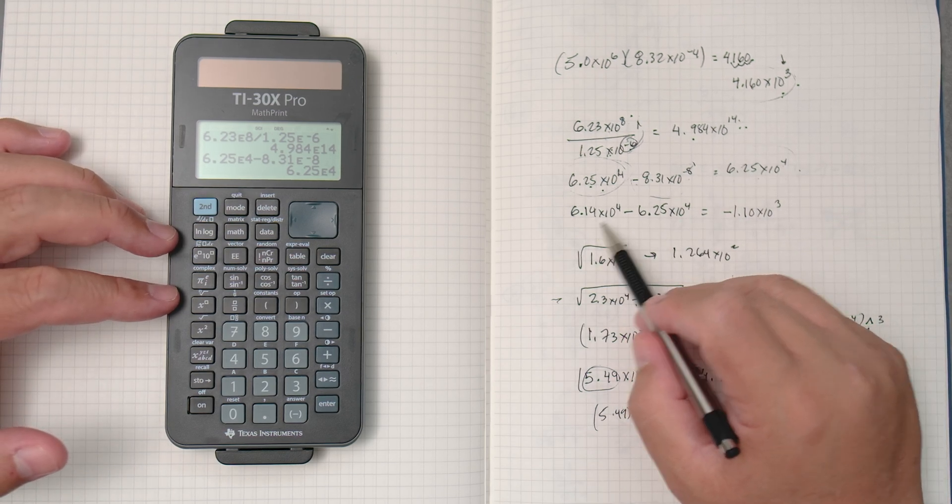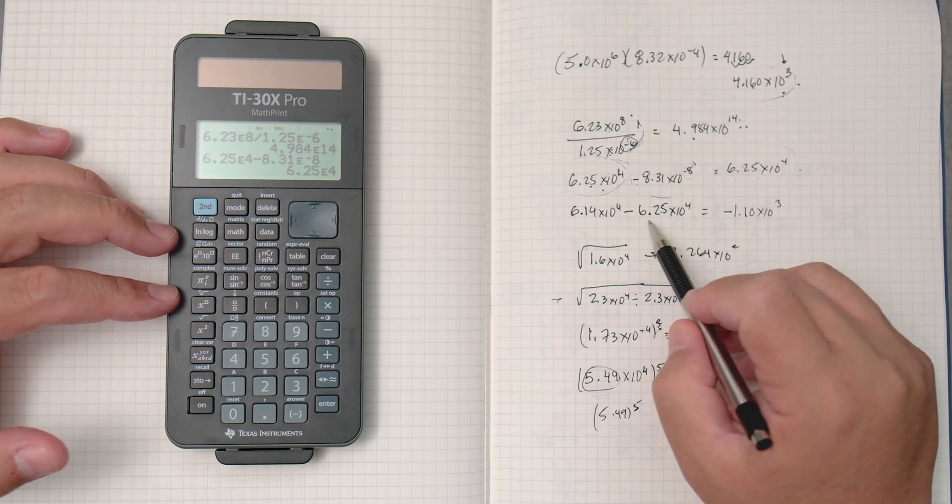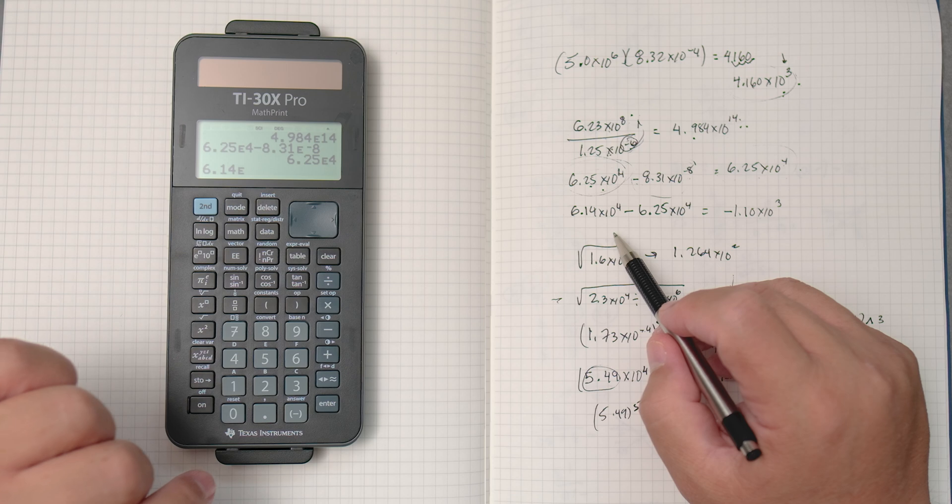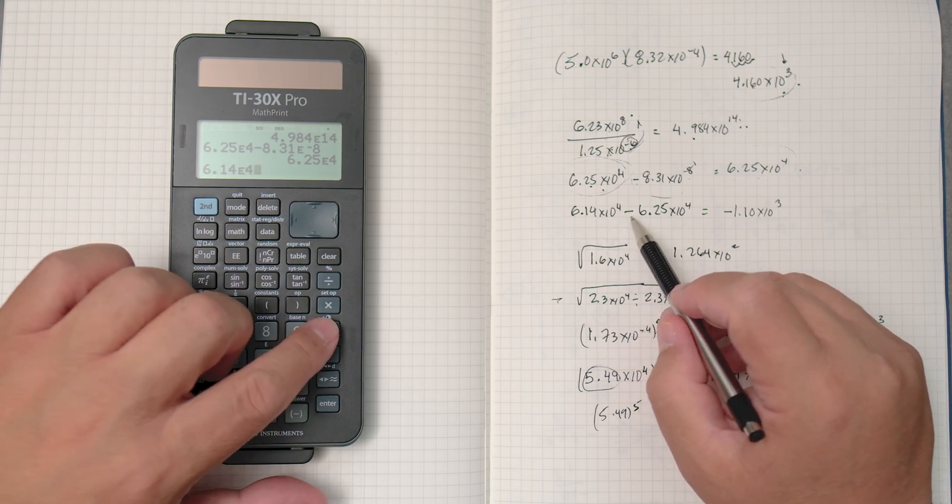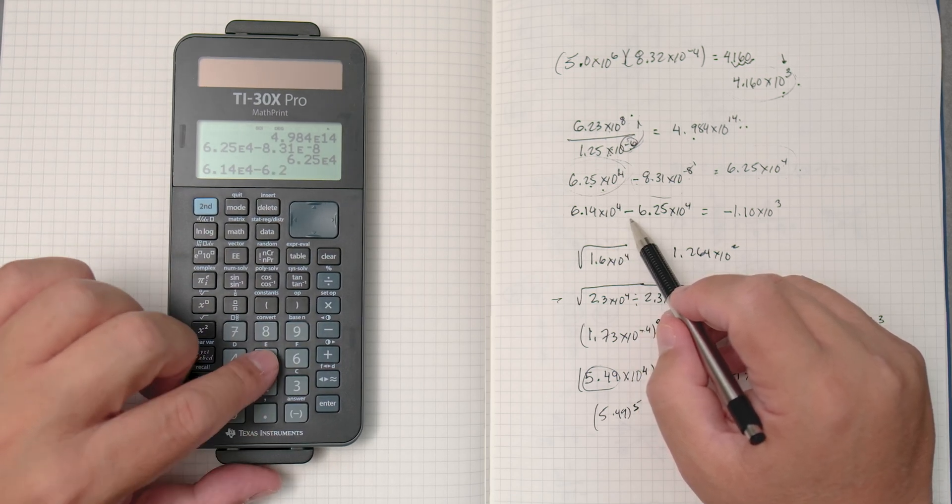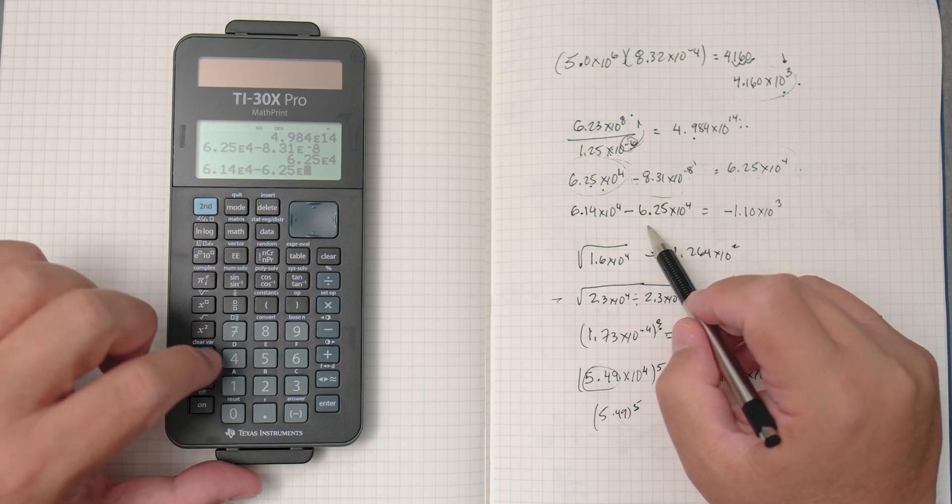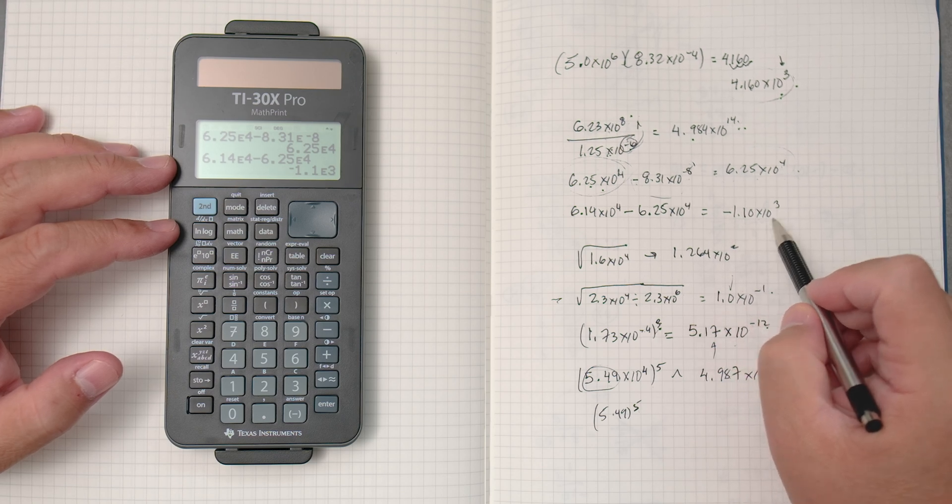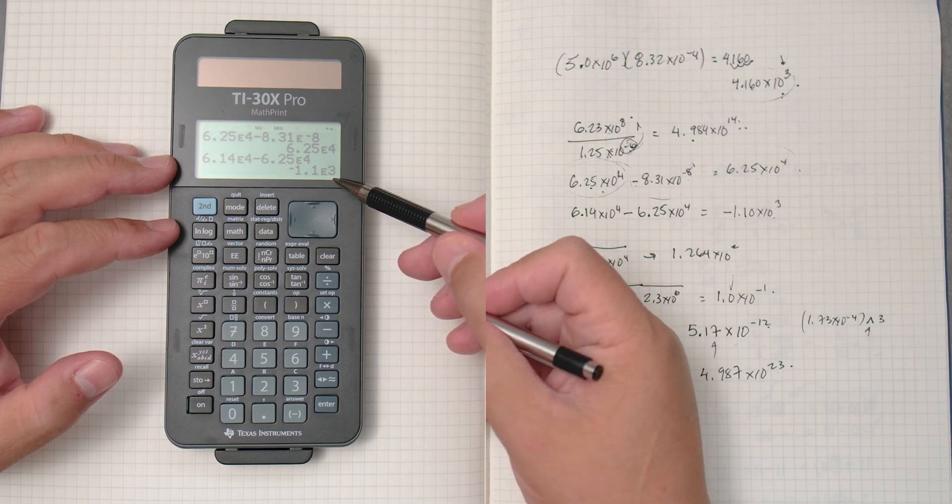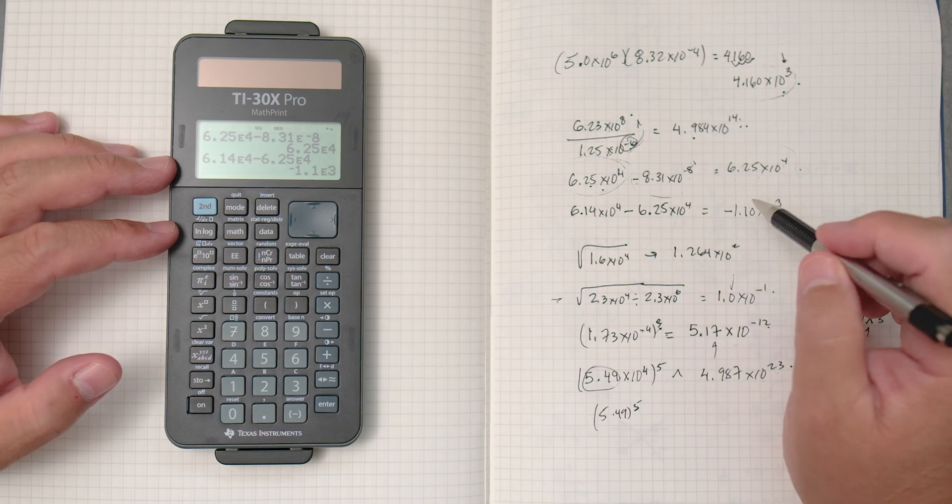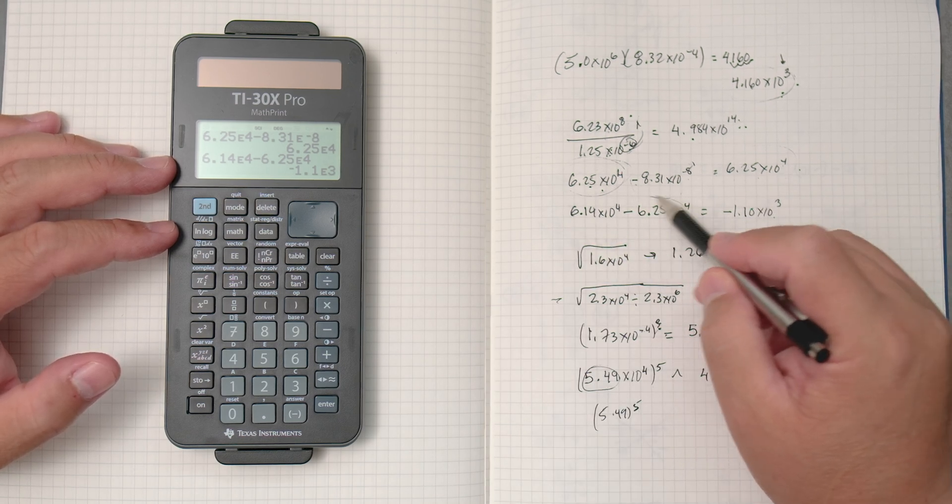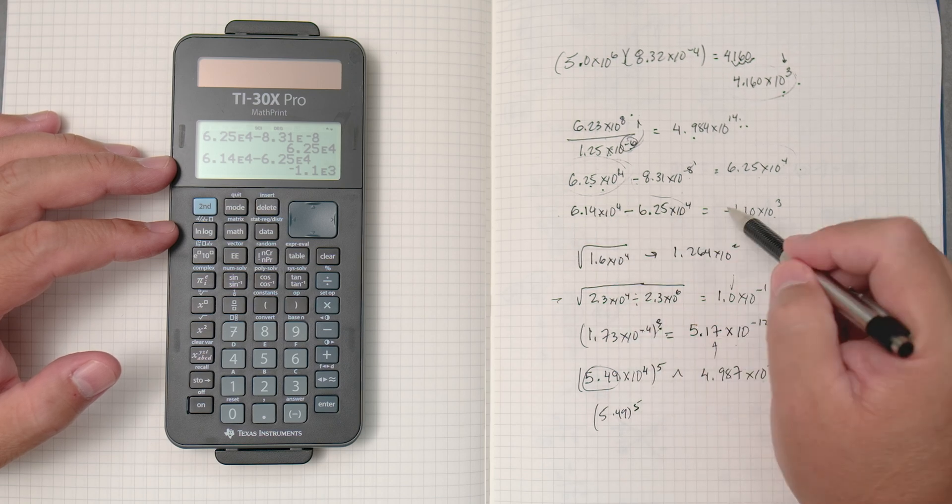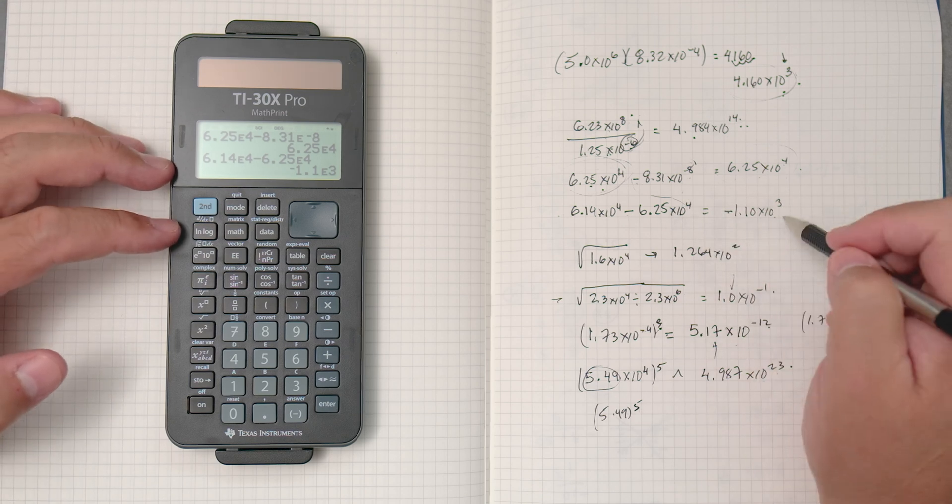Enter. Okay, let's do this one where we subtract again, but we'll notice it better. 6.14 times 10 to the fourth. Take away, 6.25 times 10 to the fourth. Enter. Negative 1.1 times 10 to the third. And you can see times 10 to the third. Now, in this case, this number is bigger than that one. And if the signs are different, you subtract and keep the sign of the bigger number.